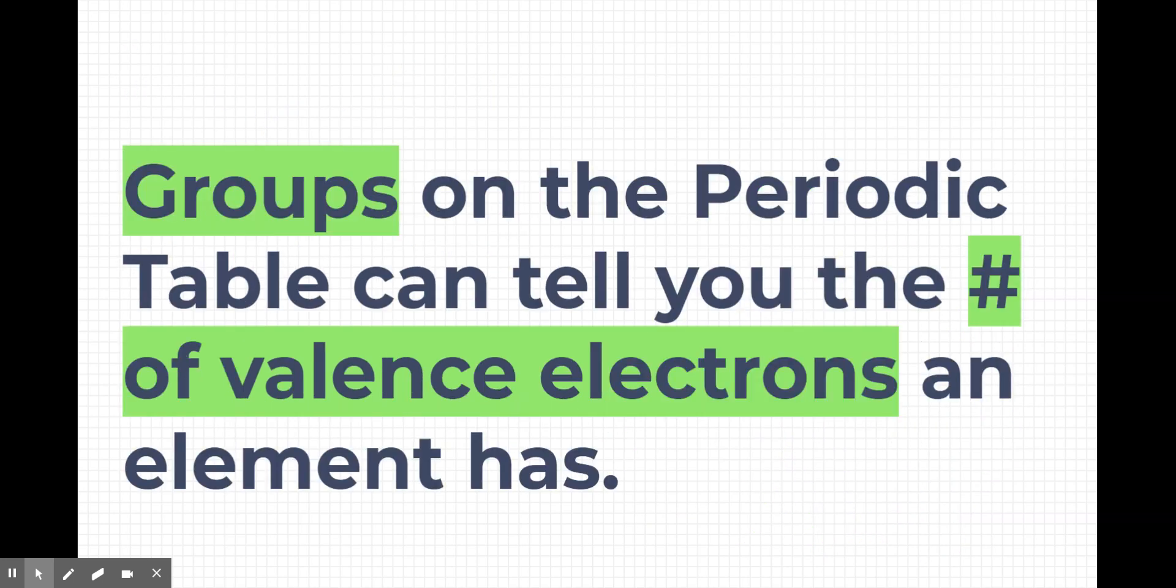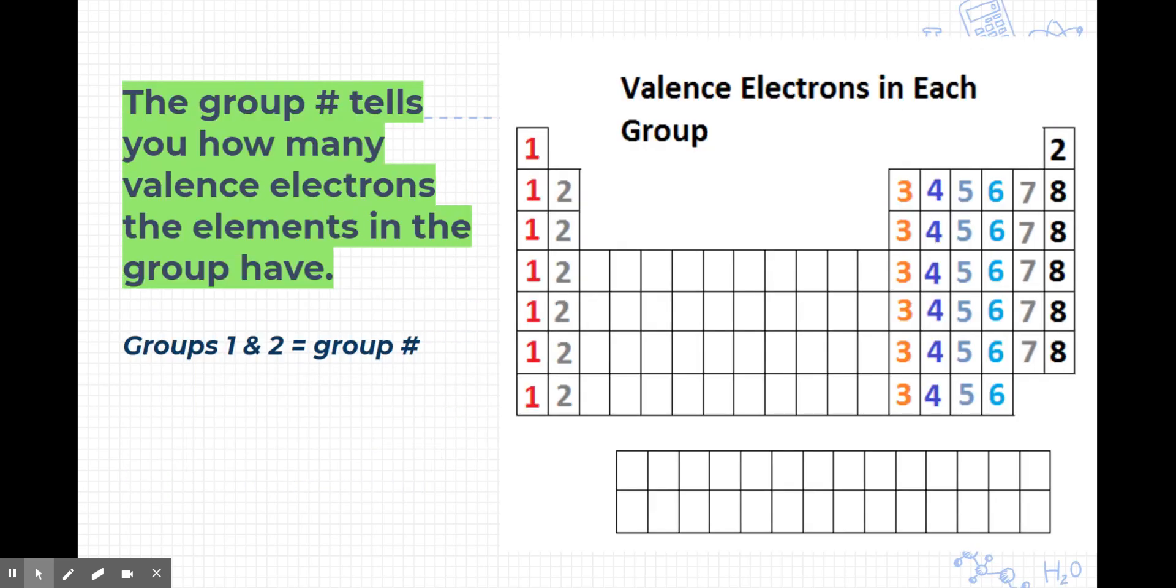So how do you find valence electrons? Well, you look at the groups on the periodic table. The group number on the periodic table tells you how many valence electrons the elements in the group have. Groups one and two, it's the same as the group number. So group one, all of the elements in group one have one valence electron. All of the elements in group two have two valence electrons.